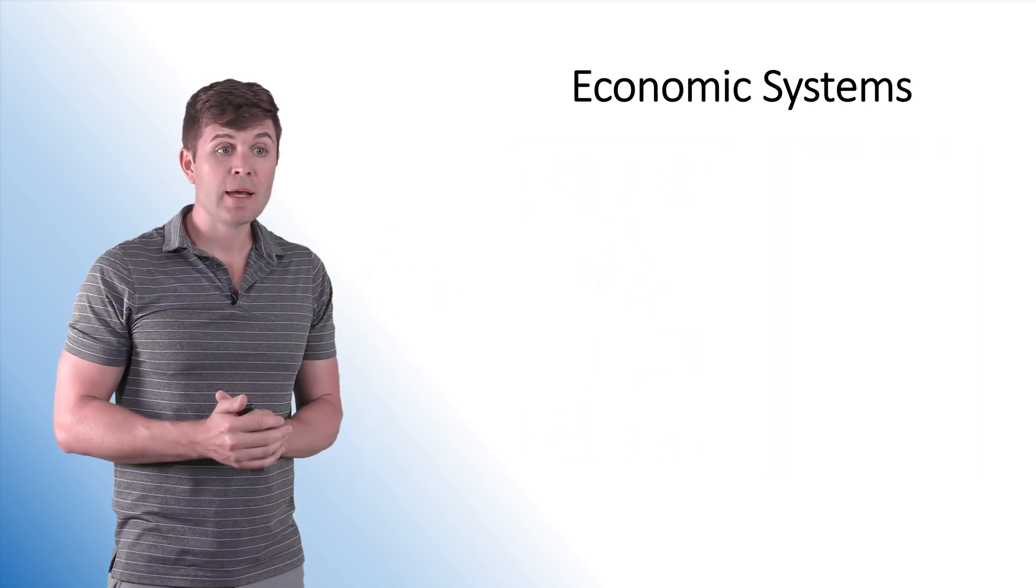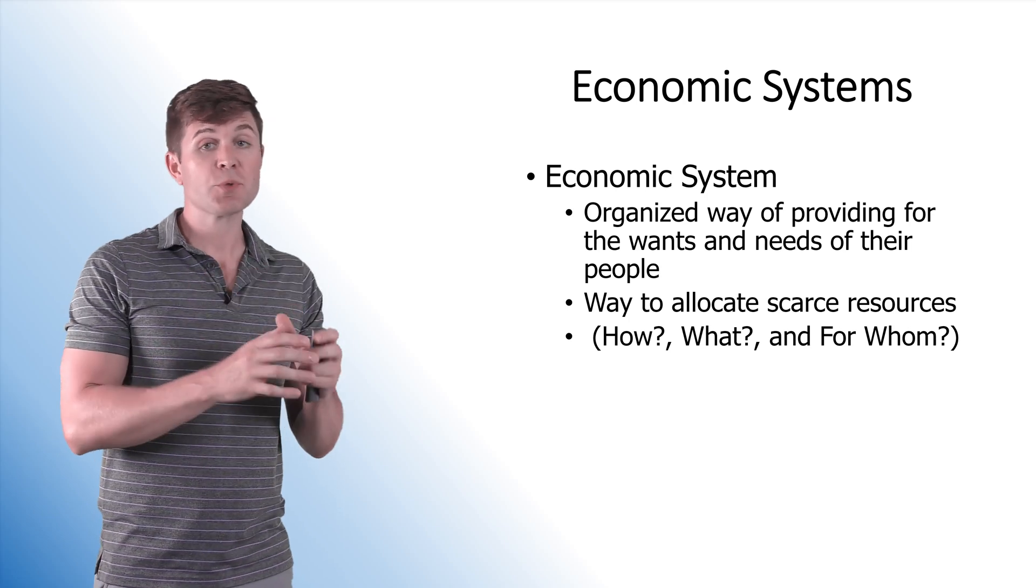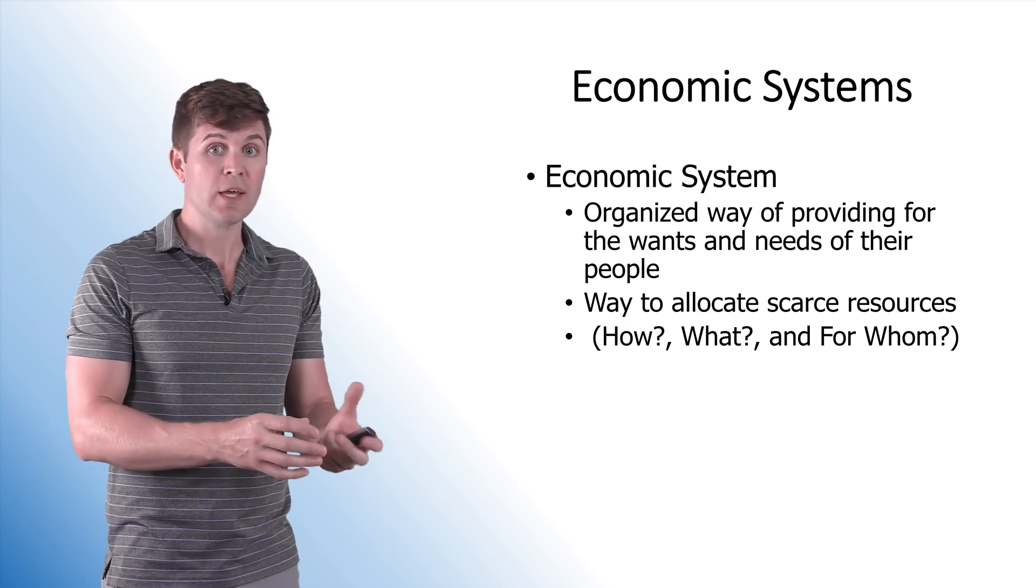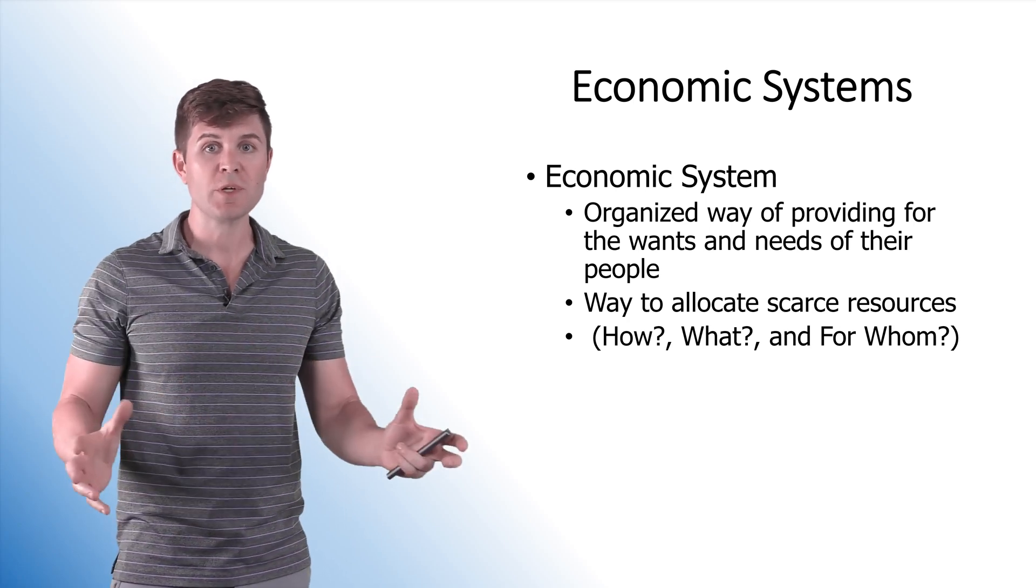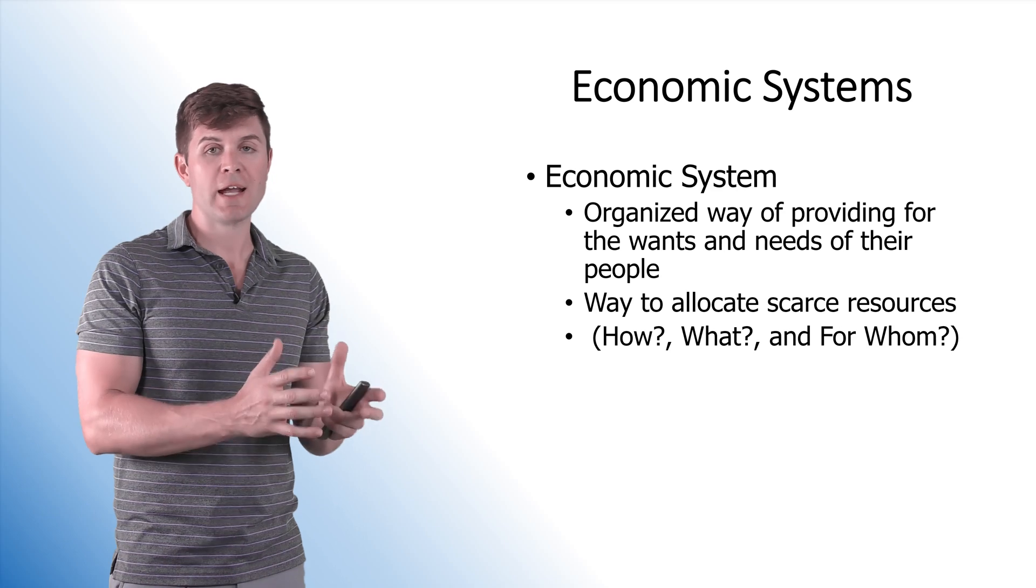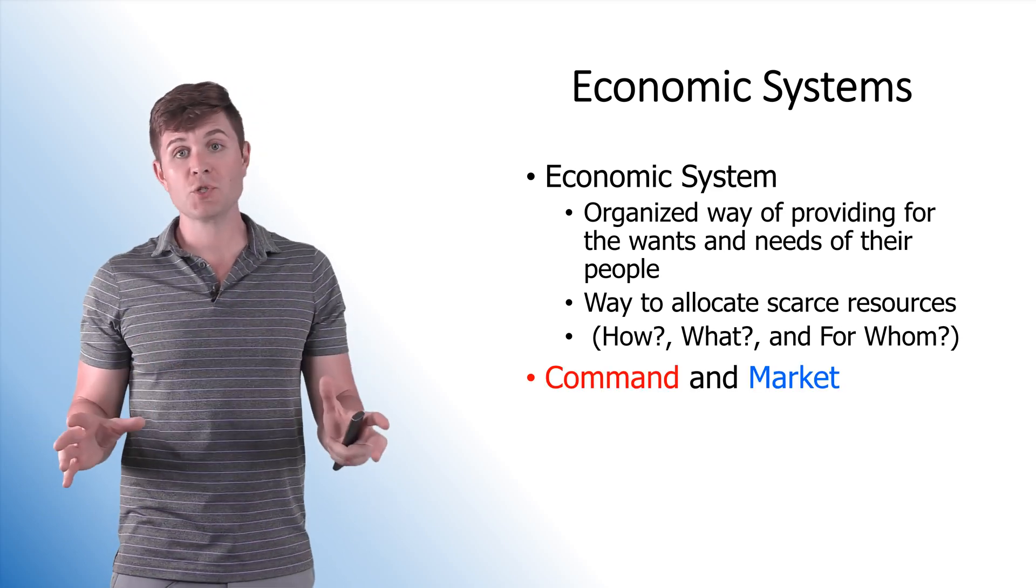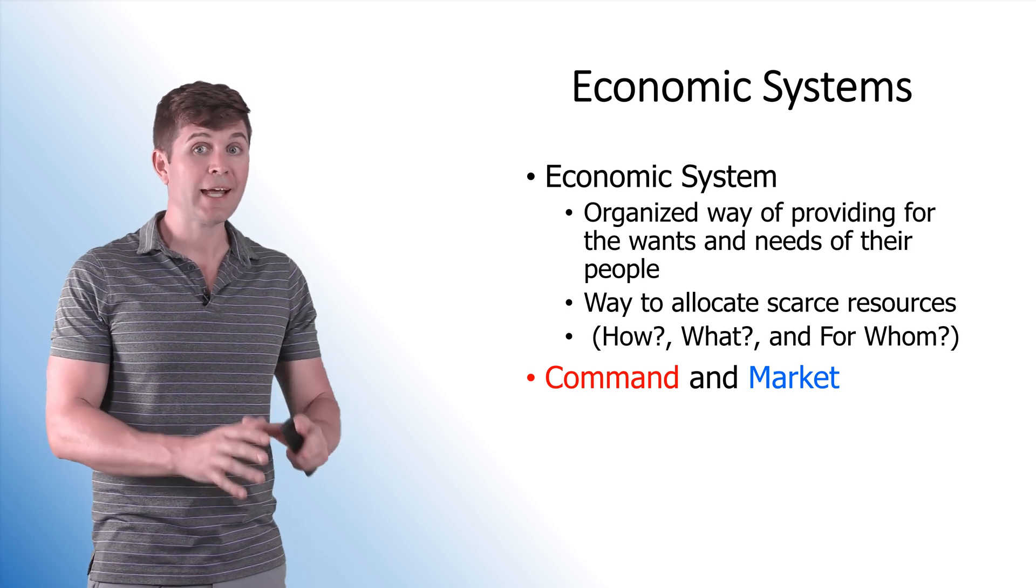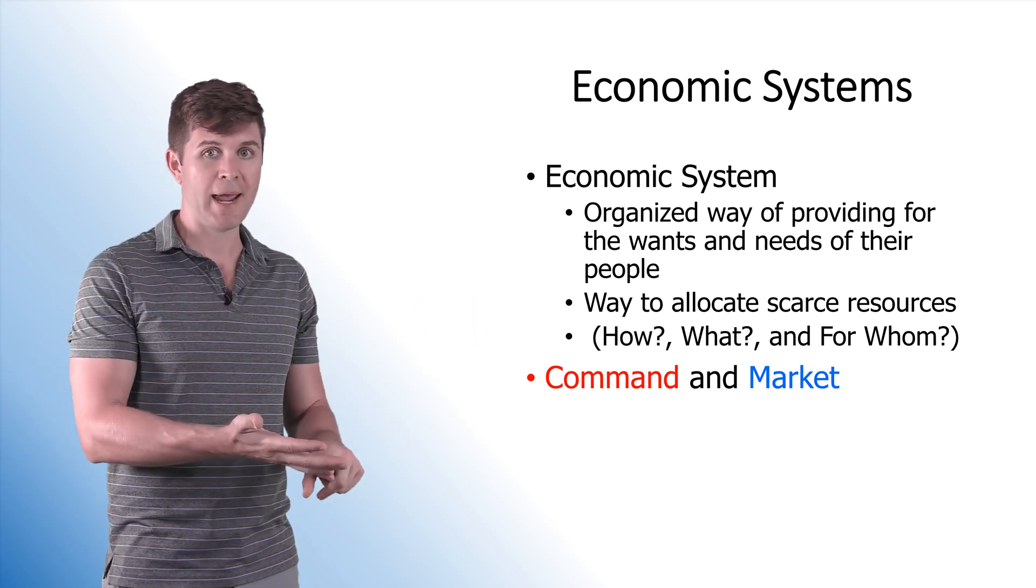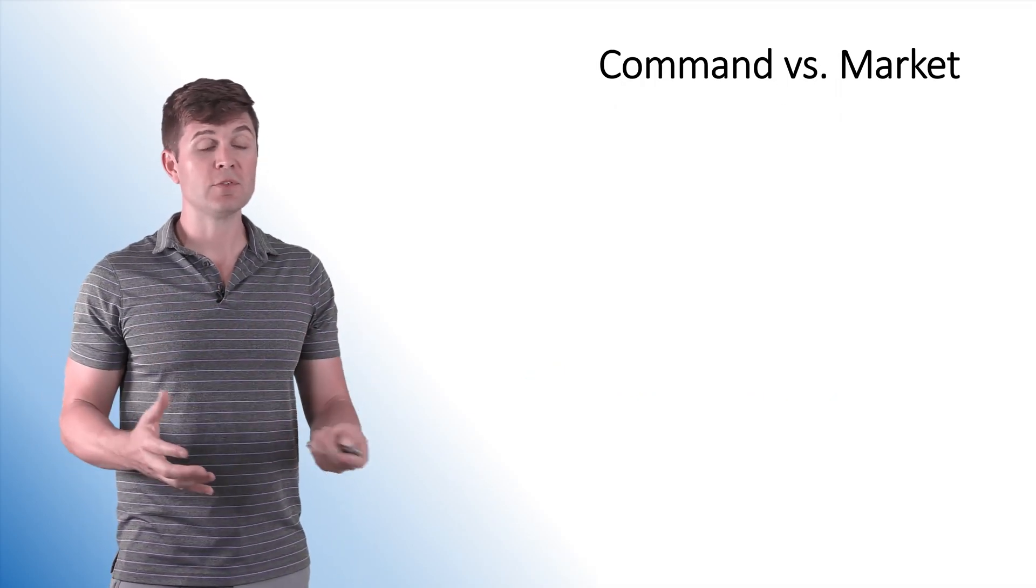All right, now on to economic systems. An economic system is simply an organized way that a country or society provides the wants and needs to their citizens. It's a way that they allocate their scarce resources to everybody that's out there. It's how they answer the what, how, and for whom questions. We've got two major economic systems that we're going to be looking at on the spectrum, and then everything else in between. The two major types are command and market economies. So let's take a look at what the difference is between these two.